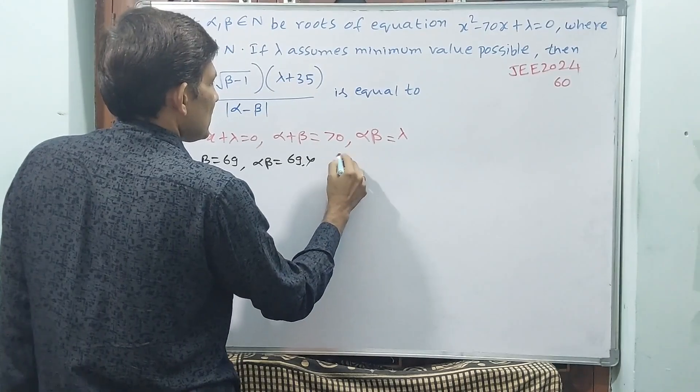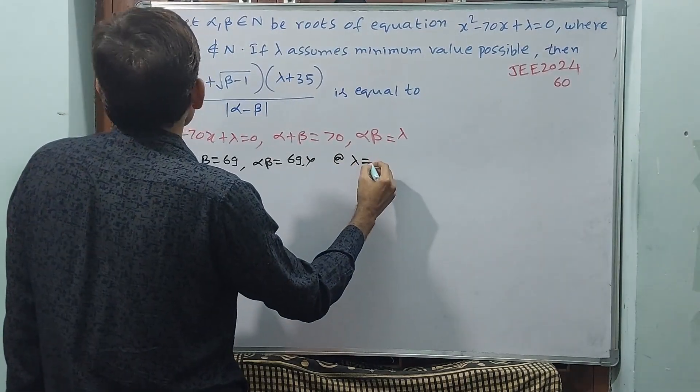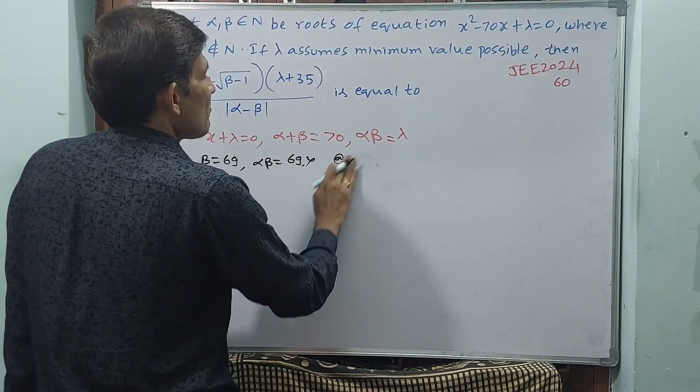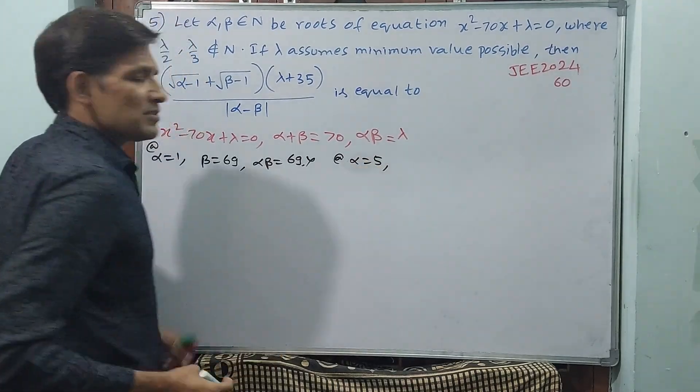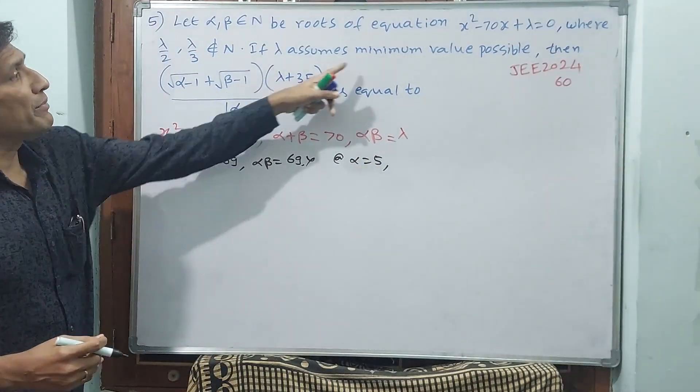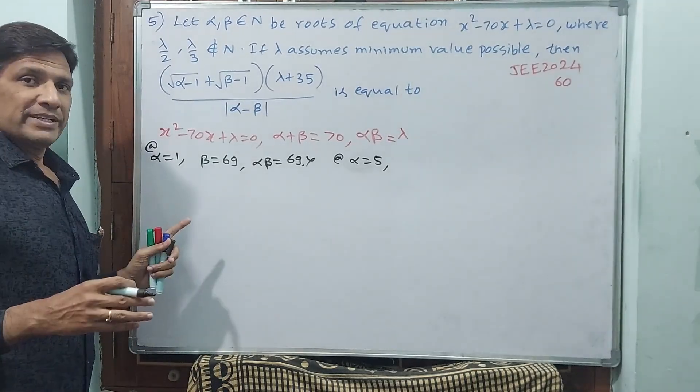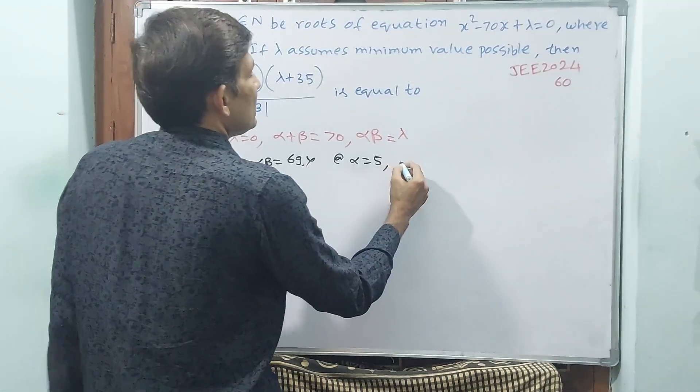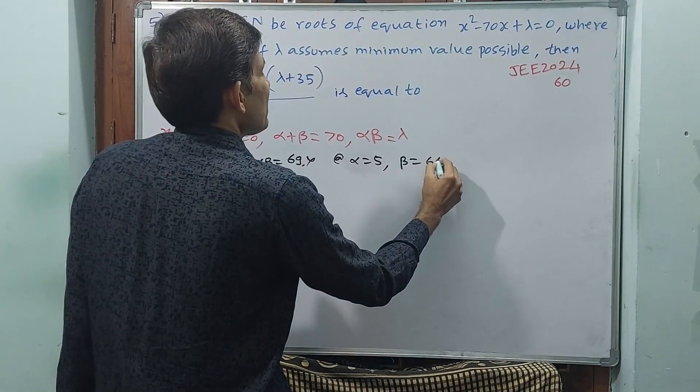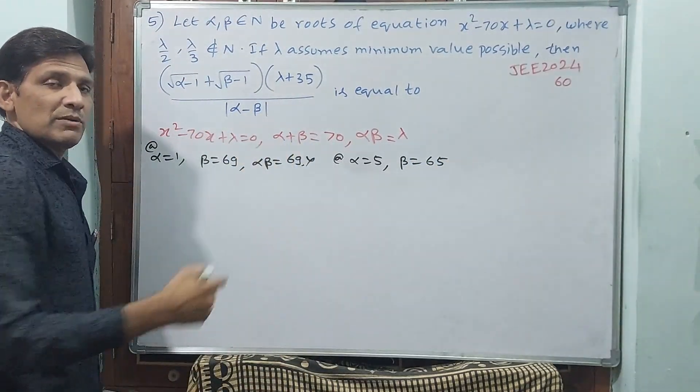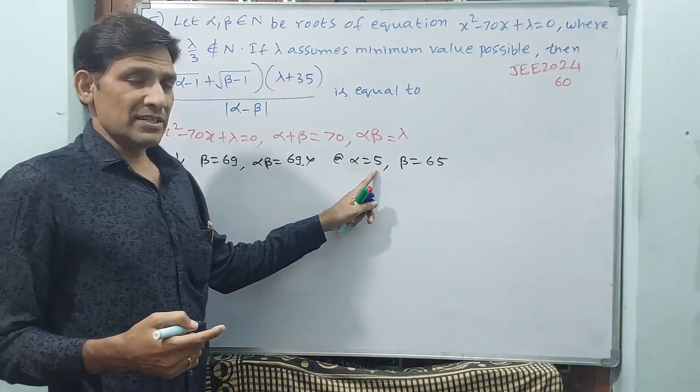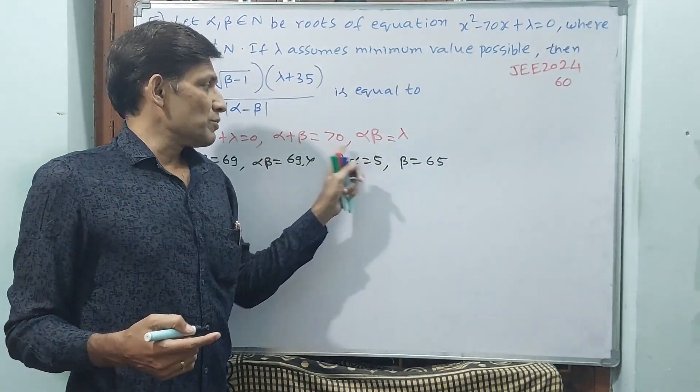Minimum α equals 5. This is minimum you have to take. Why? Because you asked me minimum value only. That is why minimum value 5 if you take, you are going to get the answer. Then what about β? 65. When you say α + β together should become 70, if one is 5, another should be 65.